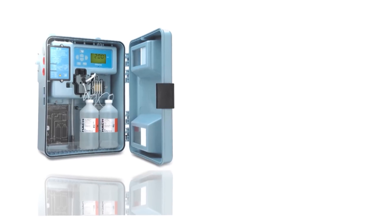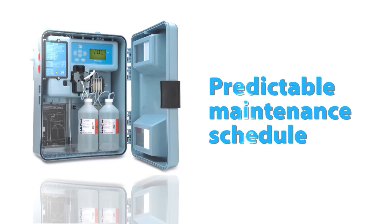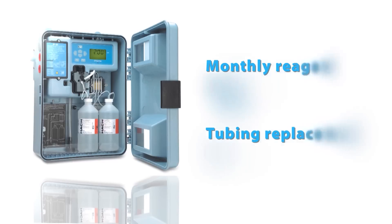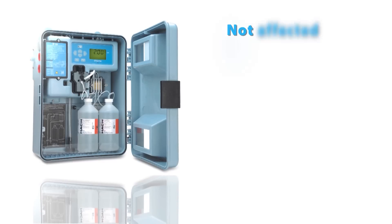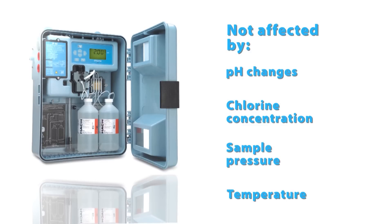Highlights of the HAWC CL17 include reliability, ease of use, and a predictable maintenance schedule consisting of monthly reagent replacement and tube replacement twice a year. The CL17 does not require user calibration and is not affected by changes in pH, chlorine concentration, sample pressure, or temperature.